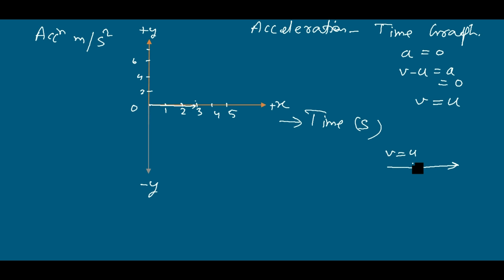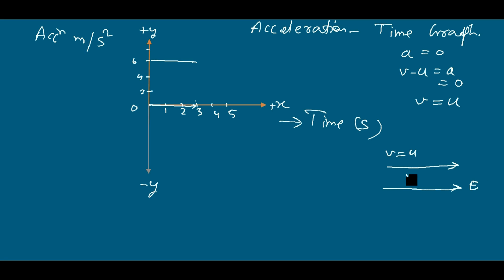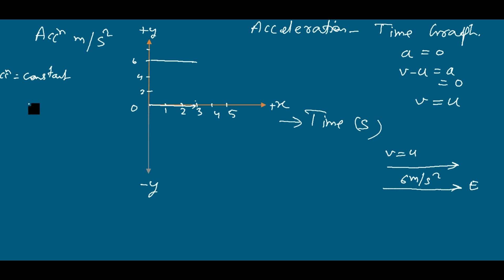That means the object was moving with a constant velocity — the initial and final velocity are the same. Now, if the object is moving with a positive acceleration of 6 meters per second squared, the acceleration is constant. That means there is a constant change in velocity from this time up to this time.